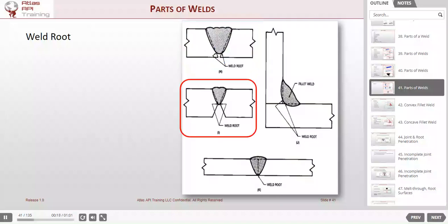On I, we've got a double V groove. The weld root has only been welded on one side, or right at the joint root.